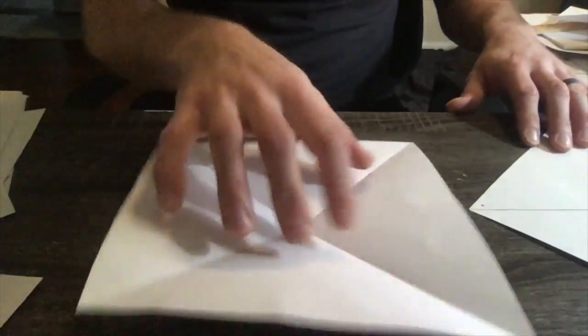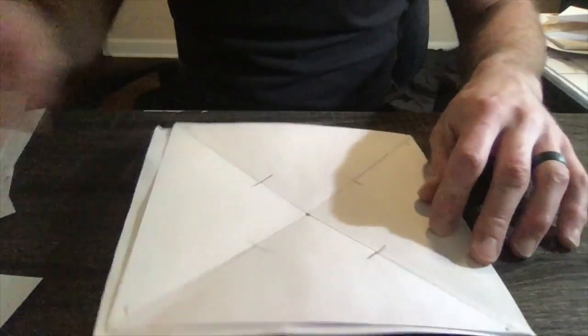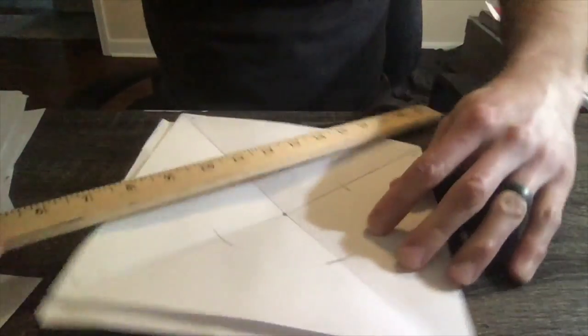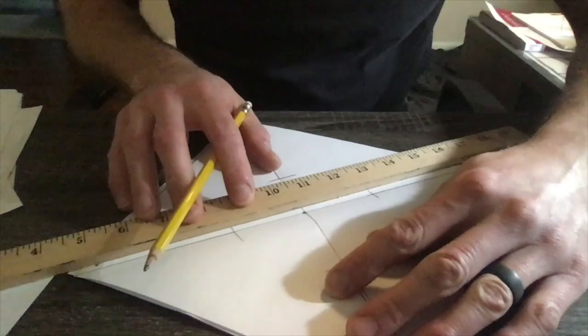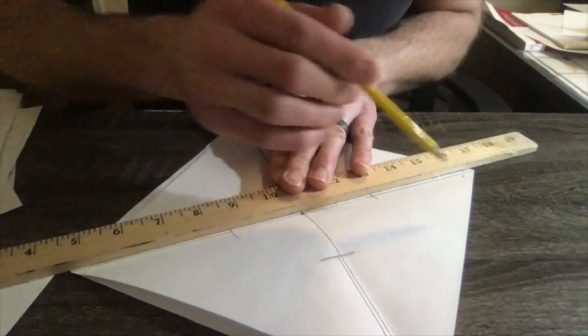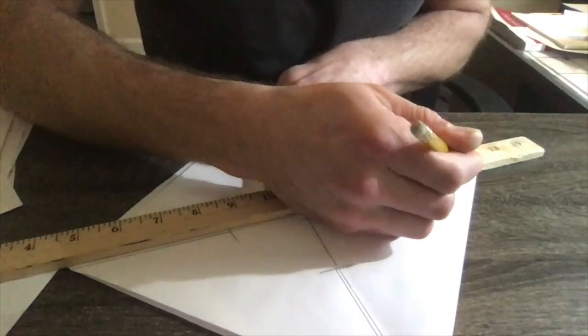Entonces yo ya lo ha hecho pero van a tomar su papel así y marcarlo de esta manera. Van a tomar su lápiz, su regla, y van a dibujar una línea desde esquina a esquina. We're going to draw a line using our pencil and our ruler from corner to corner.